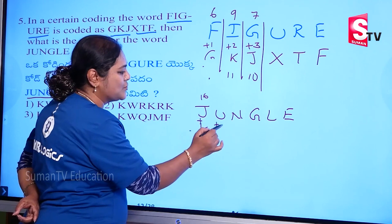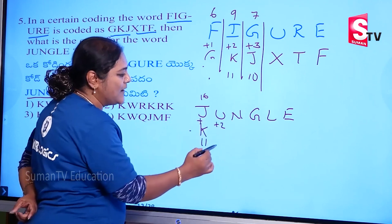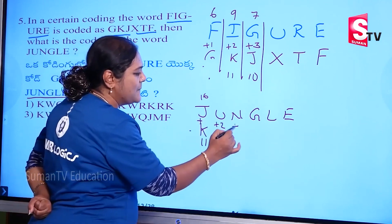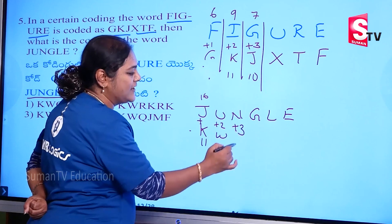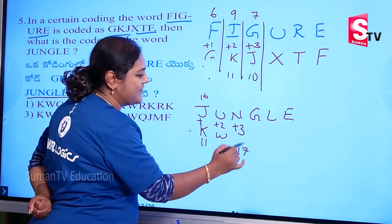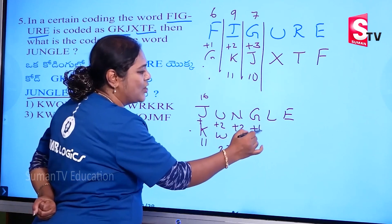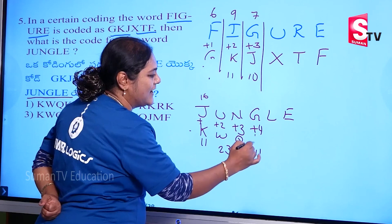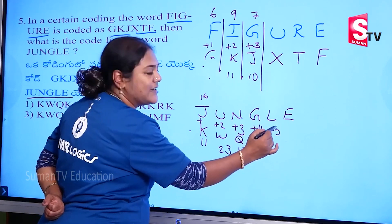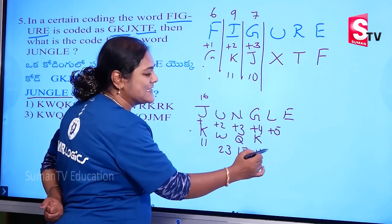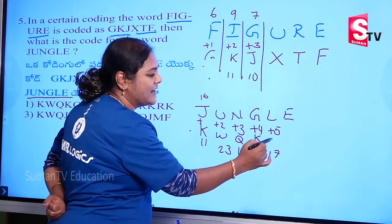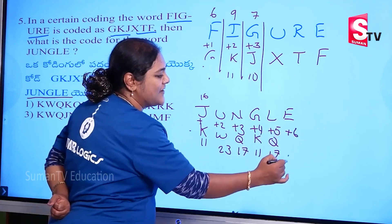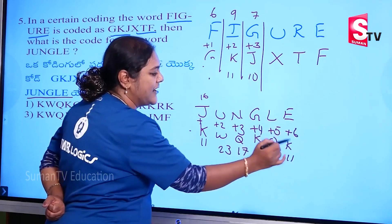Next is T, plus 2: 21 plus 2 equals 23, that is W. Plus 3: 14 plus 3 equals 17, that is Q. Plus 4: 7 plus 4 equals 11, that is K. Plus 5: 12 plus 5 equals 17, that is Q. 5 plus 6 equals 11, that is K.